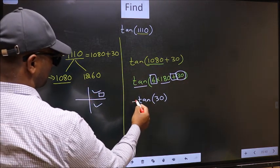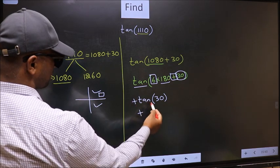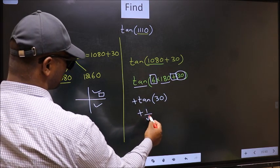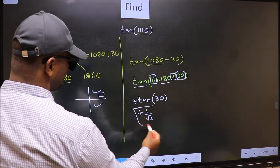So we should put plus. So plus tan 30 is 1 by root 3. This is our answer.